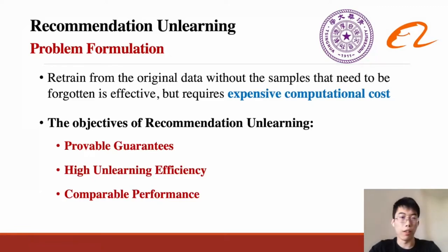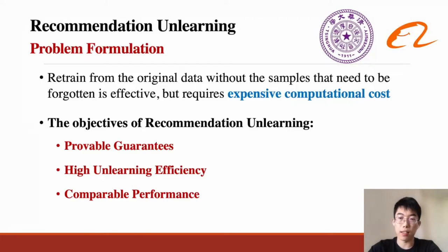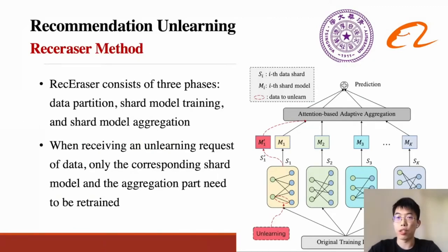Formally, we define the task of recommendation unlearning to achieve three general objectives. The first is provable guarantees — the basic requirement that removed data must be really unlearned and not influence model parameters. The second objective is high unlearning efficiency — the forgetting process should be as fast as possible. The third objective is comparable performance, meaning the unlearned model's prediction performance should be comparable to retraining from scratch. To achieve these objectives, we propose a new recommendation unlearning method called RecEraser to achieve efficient unlearning while maintaining high recommendation performance.